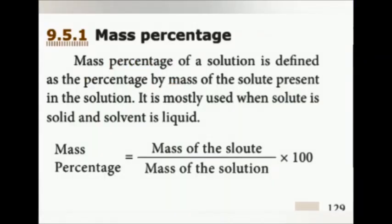Define mass percentage. It is defined as the percentage by mass of the solute present in the solution. The formula for mass percentage is: mass of solute ÷ mass of solution × 100. Mass of solution means the addition of mass of solute and mass of solvent.